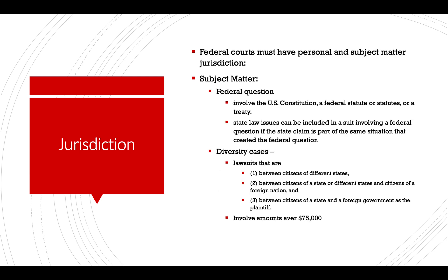For a federal court to be able to hear a case, it has to have both personal and subject matter jurisdiction. To have subject matter jurisdiction, the case has to involve a federal question or it has to be a diversity case. A federal question is going to involve the Constitution, a federal statute or statutes, or a treaty. State law issues could be included as long as there's a federal question that's part of the claim.